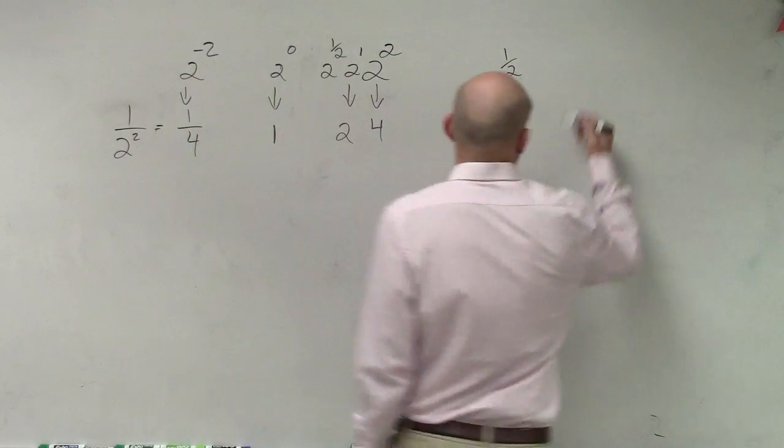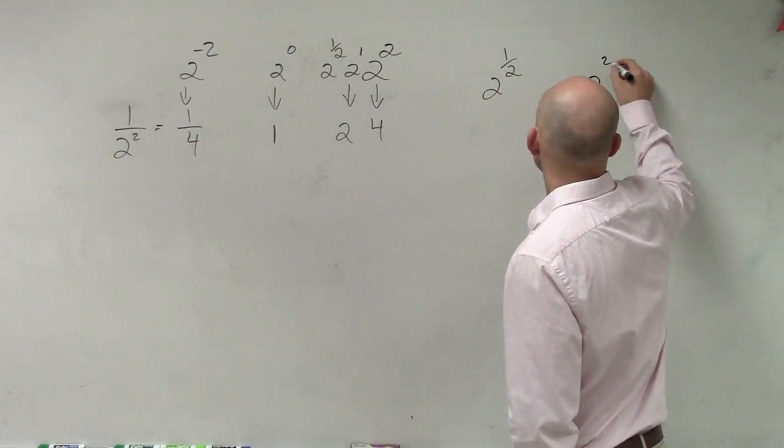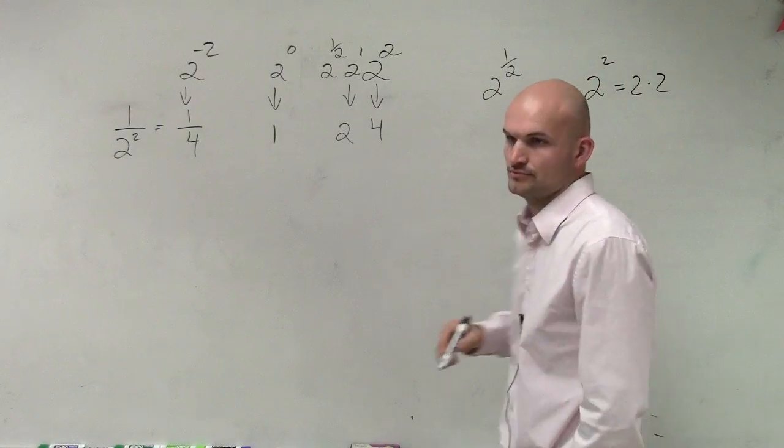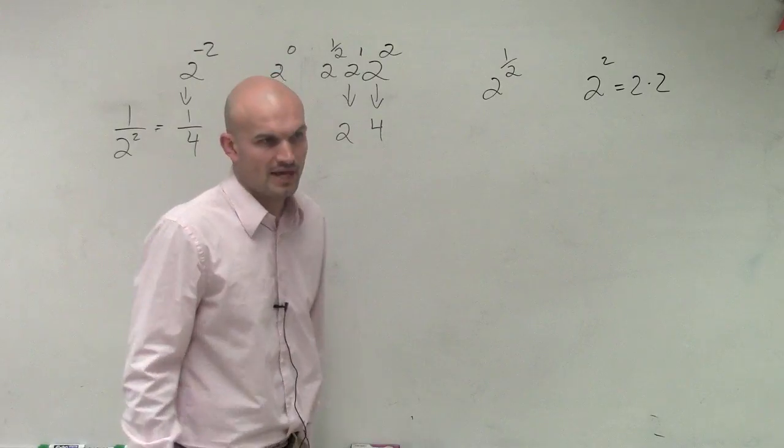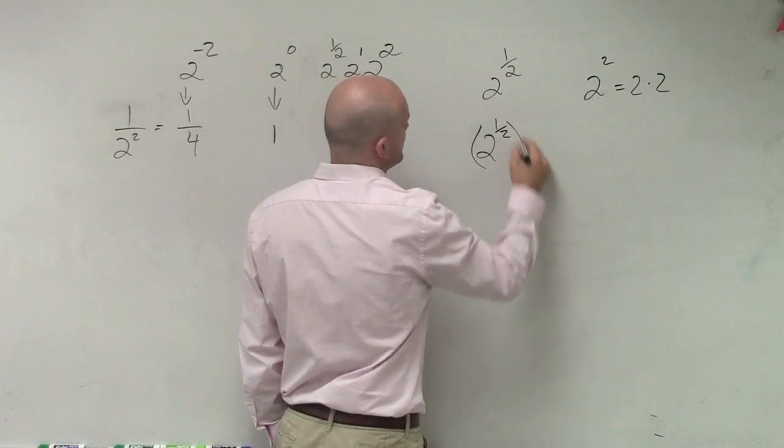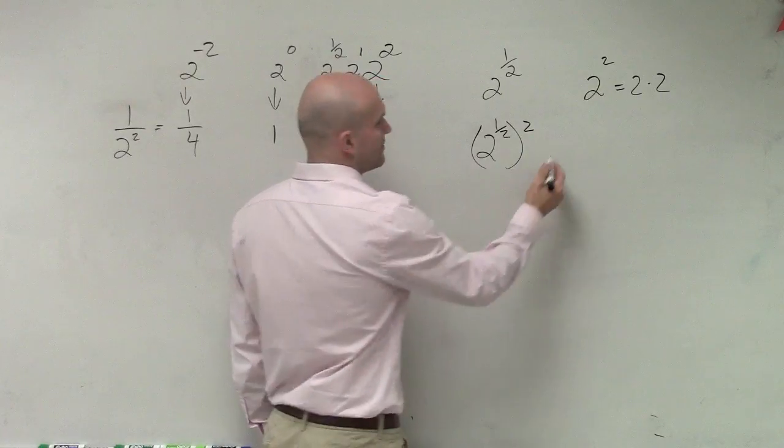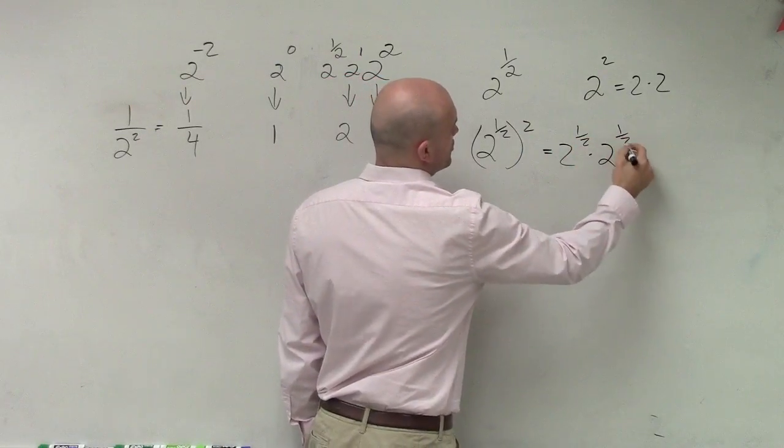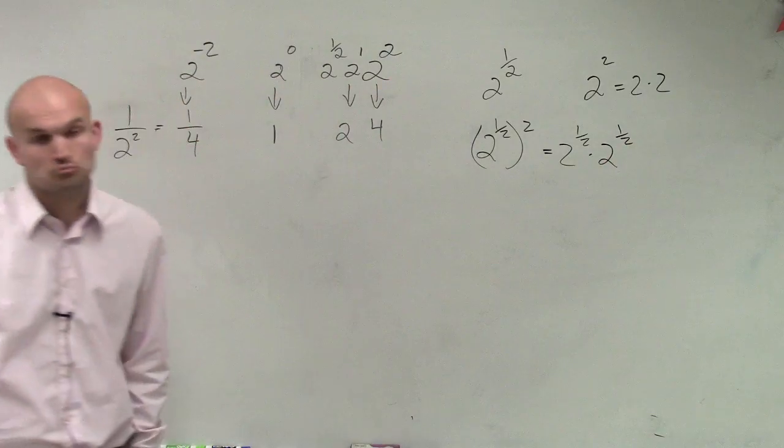You guys know that 2 squared equals 2 times 2. So what about if I did 2 to the 1 half power squared? That equals 2 to the 1 half times 2 to the 1 half.